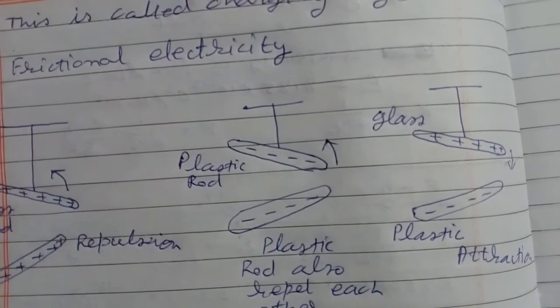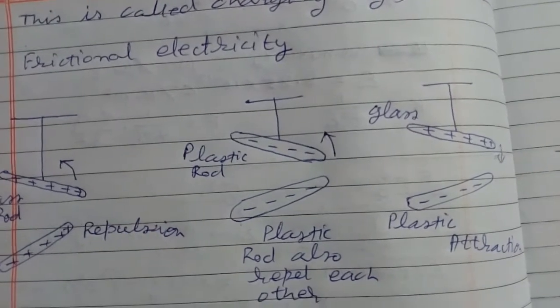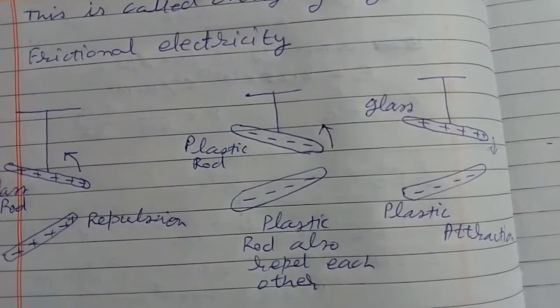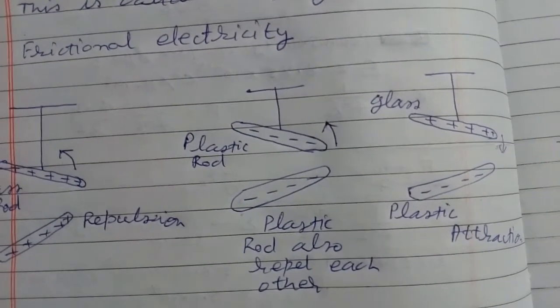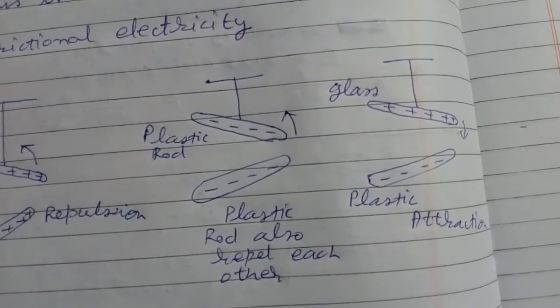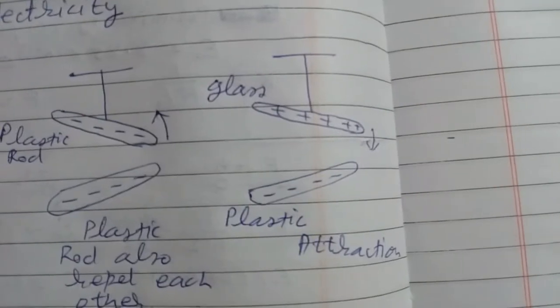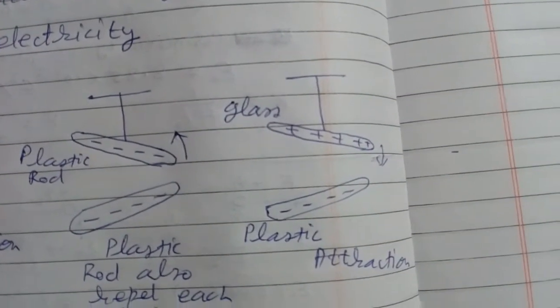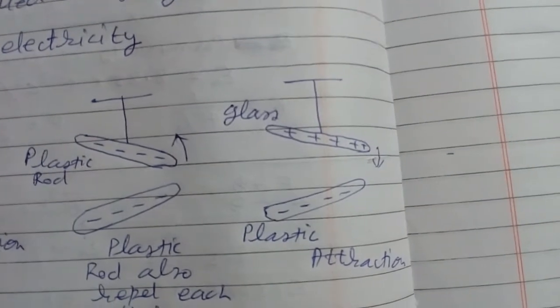Now rub a plastic rod with wool and suspend it. Rub another plastic rod with wool, and you will see these two plastic rods also repel each other. Now rub a glass rod with silk, suspend it, and rub plastic rod with wool. You will see they will attract each other.